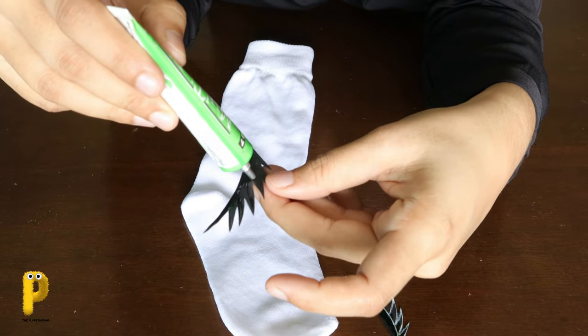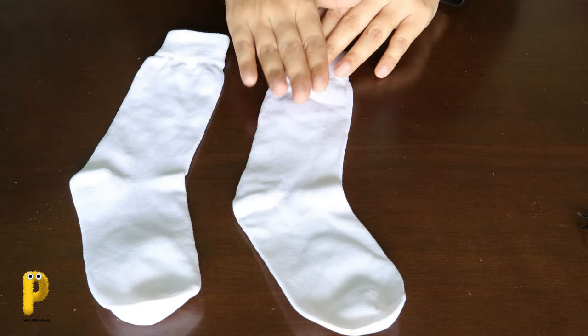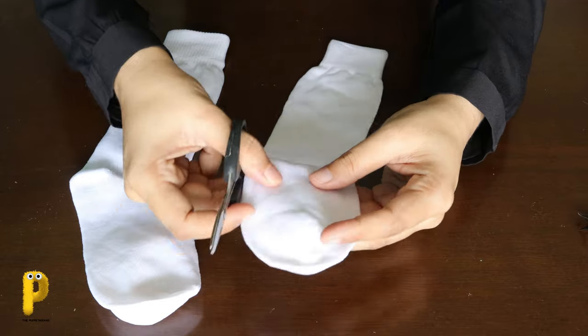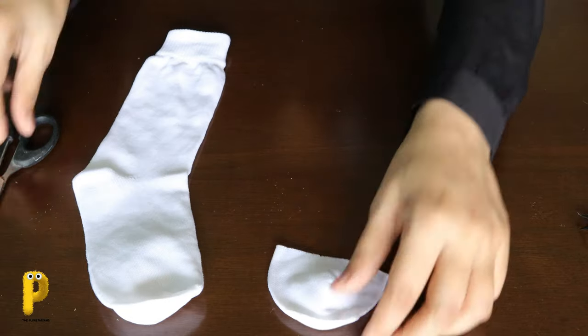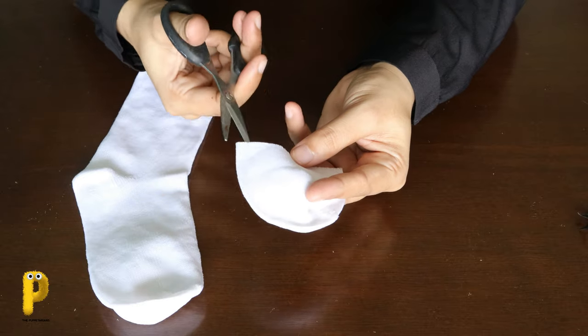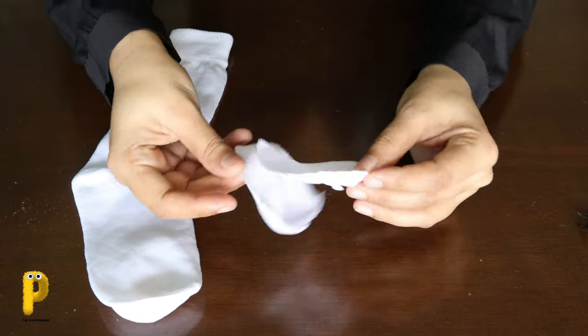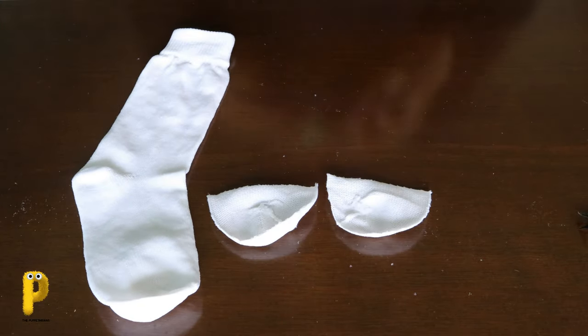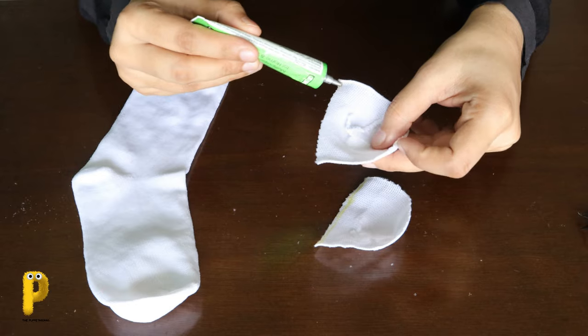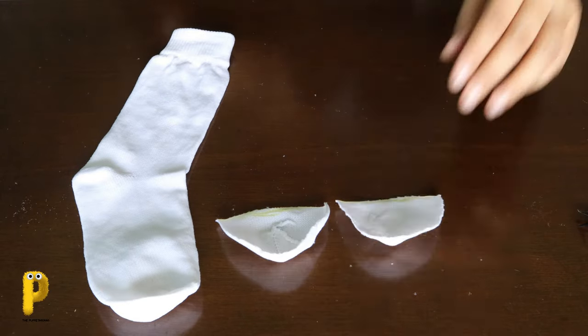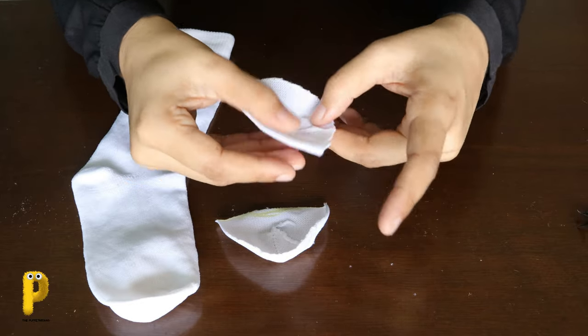First, we are going to make ears. Take the second sock now. And we will only cut the top toes part from this sock to make the ears. Like this. Now cut along the lines so that you have two halves. Put some glue at the bottom. And fold and paste the bottom part. So that our ears are sturdy and not floppy.